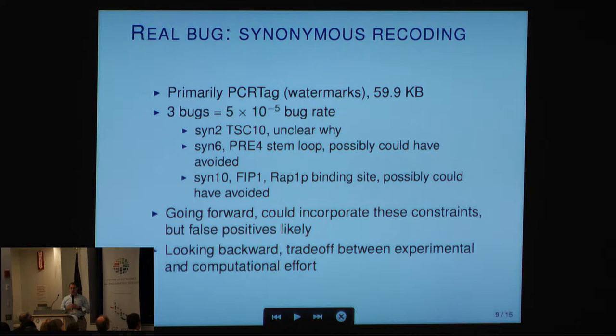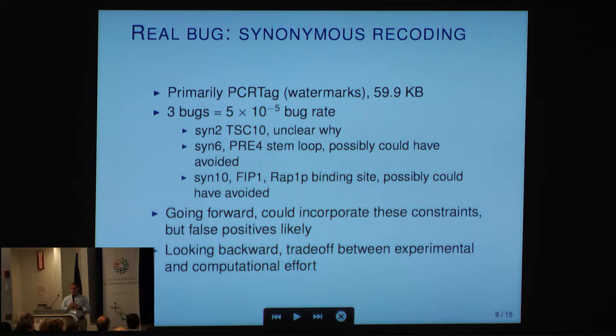Another real bug: synonymous recoding. Primarily this was for PCR tags, for watermarks — about 60 KB of bases affected. There's also some recoding for restriction enzyme sites, about 5,000 bases, so a far smaller fraction. Out of these 60,000 bases, three bugs — a bug rate of 5 times 10 to the minus 5th; much better than my bug rate when I'm programming. One of them is unclear why; one possibly involves a stem loop that possibly could have been avoided; and the other introduces a RAP1P binding site, where RAP1P then down-regulates transcription. Going forward, we could have incorporated these constraints, but we probably would have had false positives — it's a trade-off between experimental and computational effort.